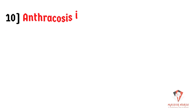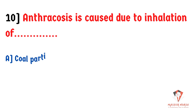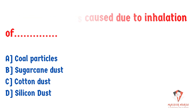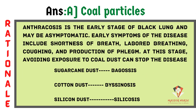Anthracosis is caused due to inhalation of: A) Coal particles, B) Sugarcane dust, C) Cotton dust, D) Silicon dust. The answer is A, coal particles. Anthracosis, also called black lung disease, is caused by inhalation of coal particles and most commonly occurs in coal mines. Early symptoms include shortness of breath, labored breathing, coughing, and sputum production. Avoiding exposure early can prevent disease progression. Sugarcane dust causes bagassosis, cotton dust causes byssinosis, and silicon dust causes silicosis.